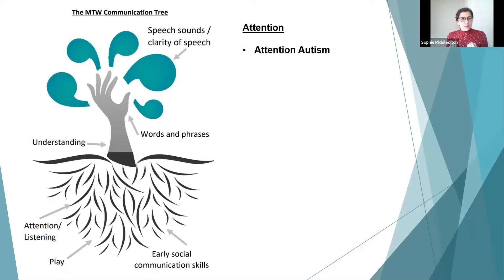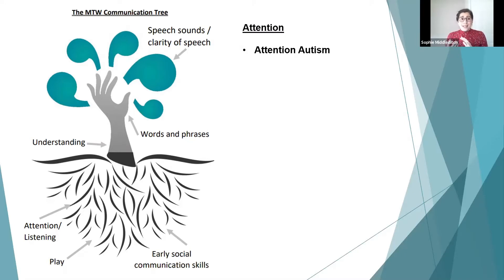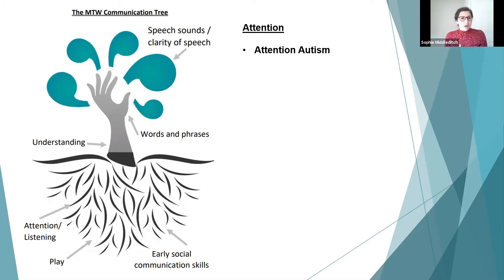Within attention there are also some core things we can miss — like getting down on the child's level. If they're on the floor, be on the floor with them. Use their name to try to get their attention, and if they don't respond that's fine. The key is: don't give an instruction until they are focused. If a child is in their own world, we don't want to say something important until they are ready to listen. Wait, and then repeat if needed.